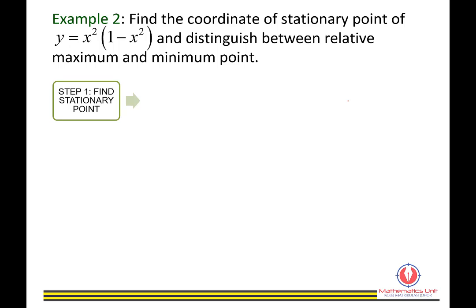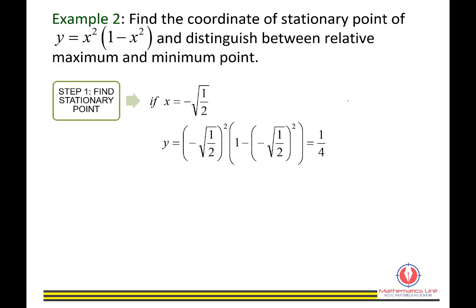For x equals negative set 1 over 2, substituting into the equation gives y equals 1 over 4. So the third stationary point is (negative set 1 over 2, 1 over 4).